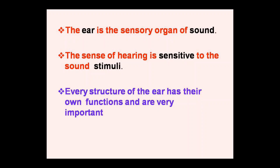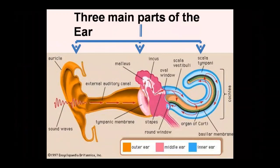The ear is divided into three main parts: the outer ear, the middle ear, and the inner ear. In the diagram you can clearly see these three parts. The outer ear is the yellow part, the middle ear is the pink part, and the inner ear is the blue part.